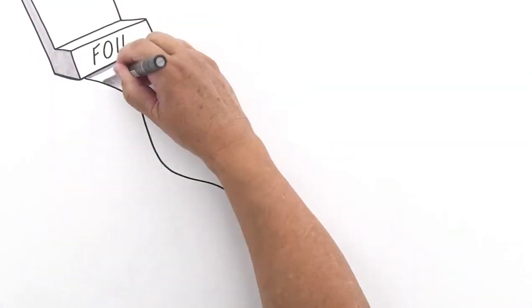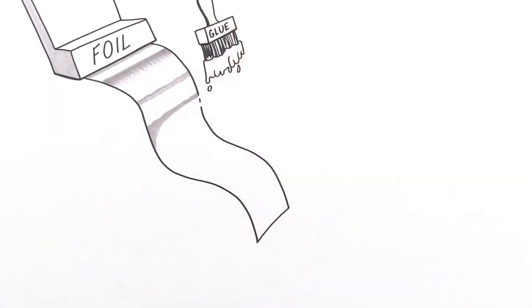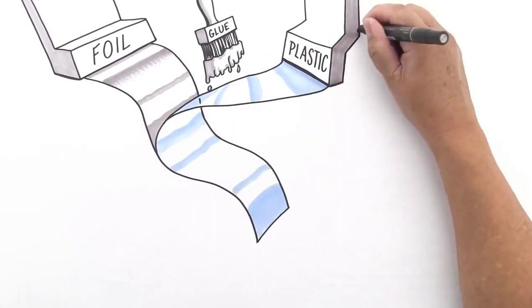The old way to make radiant barrier was to take aluminum foil or film and either glue or laminate it to a sheet of plastic.